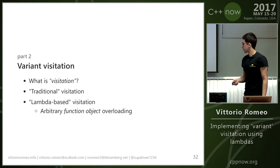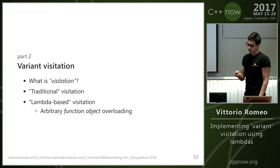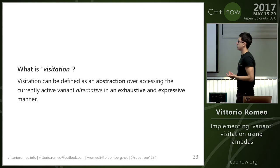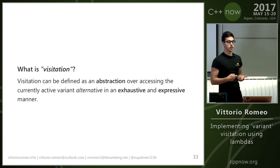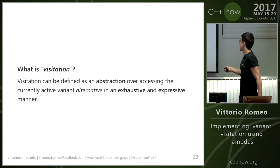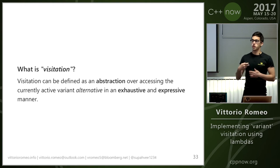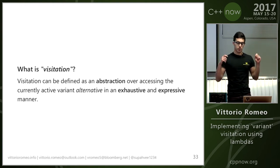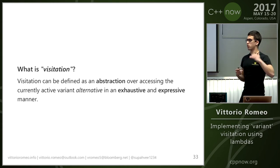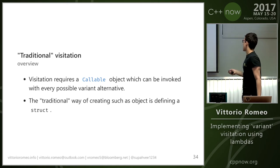Let's cover variant visitation. We'll give a definition of visitation, then cover traditional visitation, and finally implement our own lambda-based visitation. I like to think about visitation as an abstraction that allows you to access the currently active alternative in an exhaustive and expressive manner — you're forced to provide behavior for all the types the variant supports, and it's expressive because it doesn't work through a chain of if-else.